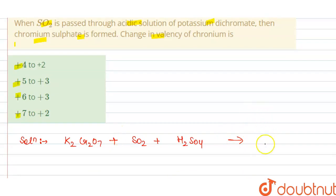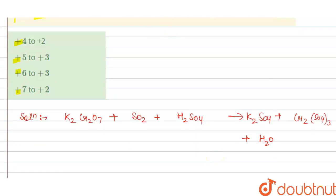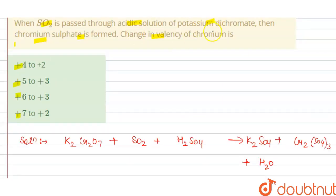So it will give K2SO4 with Cr2(SO4)3 and H2O. So we have to find the change in valency of chromium here.